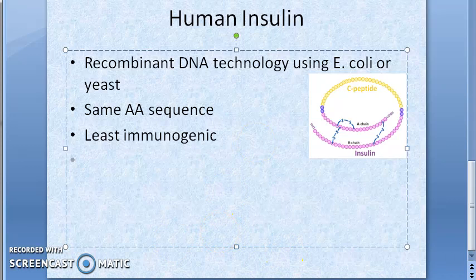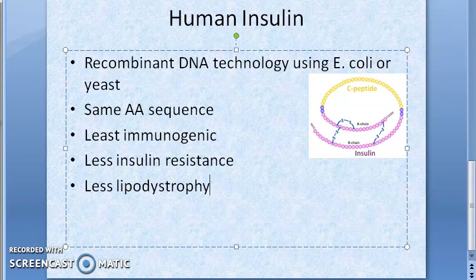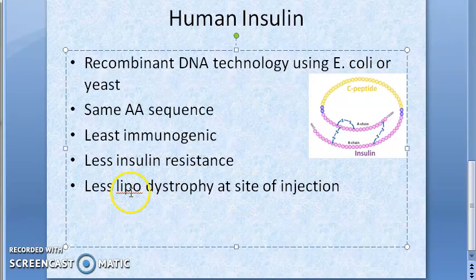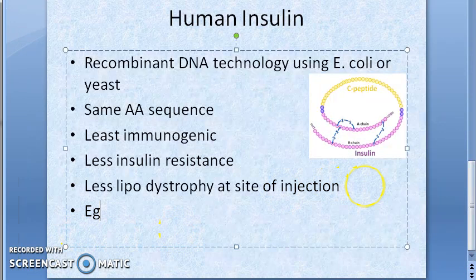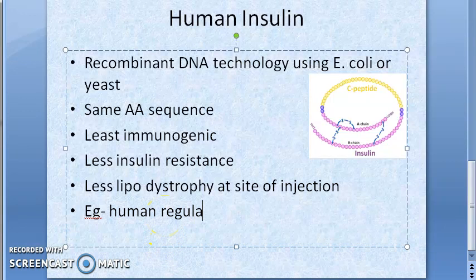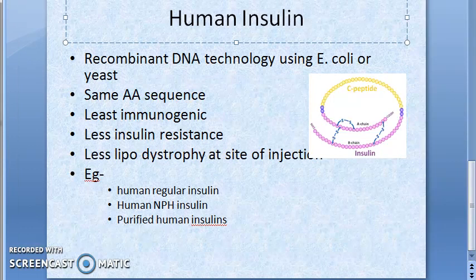Human insulins cause least insulin resistance and least lipodystrophy at the site of injection. Examples include human regular insulin and human NPH insulin — also called purified human insulins.